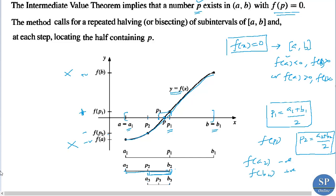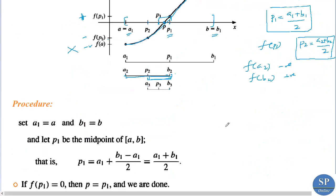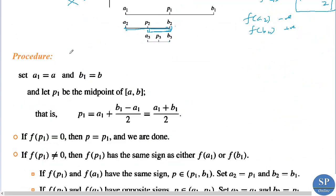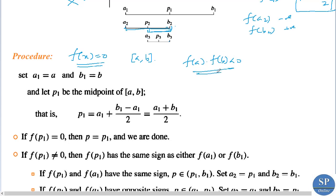This is the bisection method, based on the intermediate value theorem. To apply this method, we need an interval [a, b] such that f(a) and f(b) are of opposite signs, i.e., f(a) · f(b) < 0. We need such an interval where f(a) · f(b) < 0.